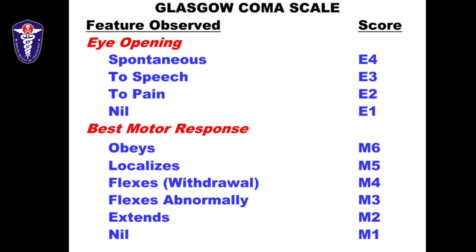Moving on to motor score: if the patient obeys a verbal command it is M6; if he localizes pain it is M5; if there is a withdrawal response to a stimulus it is M4; if there is abnormal flexion it is M3; if it extends to a pain stimulus it is M2; and if there is no response it is M1. So the eye score ranges E4 to E1, and motor score M6 to M1.